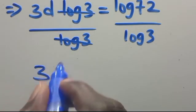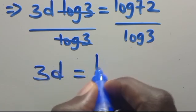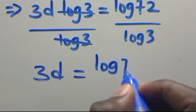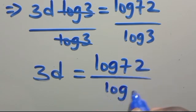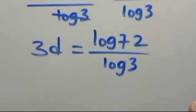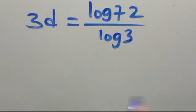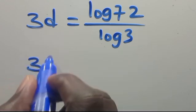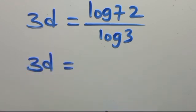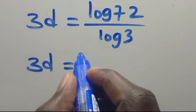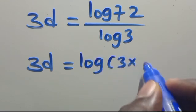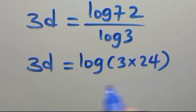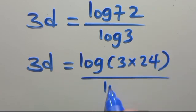From here, dividing through gives us 3D equals log 72 over log 3, which we can write as log of 3 times 24 over log 3.